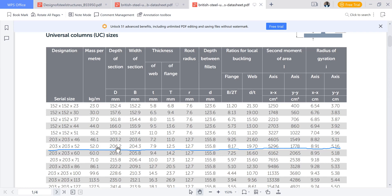For example here, our D will be 206.2, our B will be 203, our t will be 7.9, our capital T is 12.5. Our radius of gyration along x, rxx, will be 8.91 centimeters and our radius of gyration along y-y axis will be 5.16 centimeters.